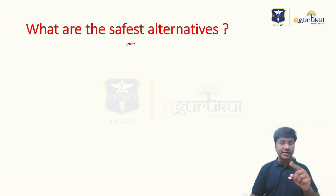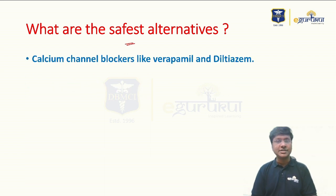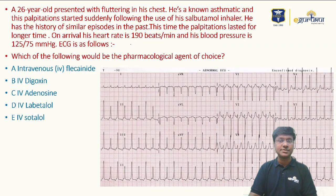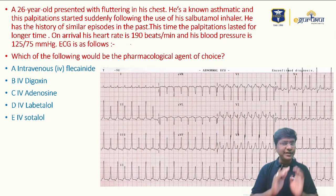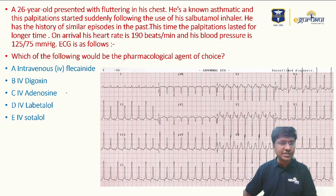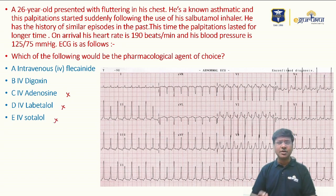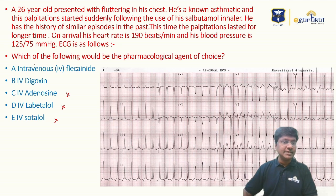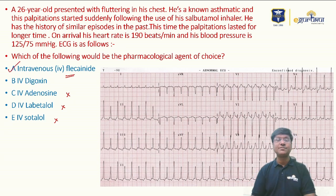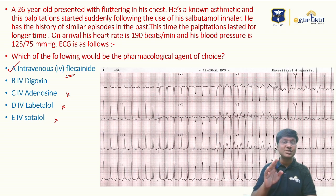The safest alternatives are calcium channel blockers, specifically diltiazem and verapamil. However, verapamil is not among the options. Adenosine cannot be given, labetalol is an alpha plus beta blocker so it's avoided, and sotalol is a beta-blocker usually avoided in bronchial asthma. Therefore, the other alternative available in the options is intravenous flecainide, which is the pharmacological agent of choice in this patient.